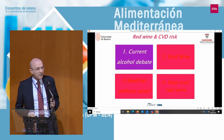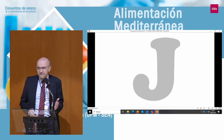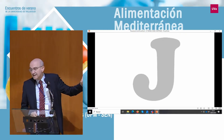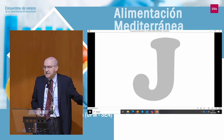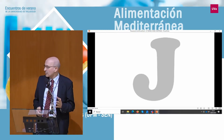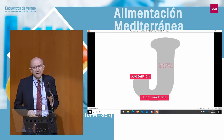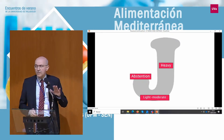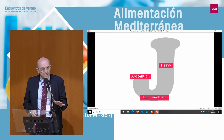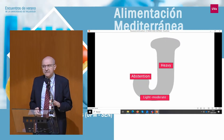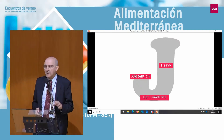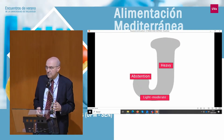Starting with the alcohol debate, all of you know this J-shaped association between alcohol consumption and total mortality or cardiovascular disease. The lowest risk is for light to moderate intake. This is supported by more than 100 epidemiological studies. But now it is confronted, particularly by the global burden of disease study and also by the Mendelian randomization studies.